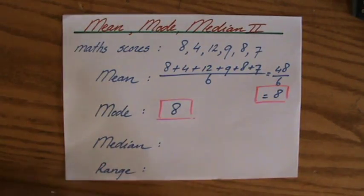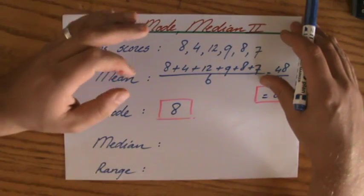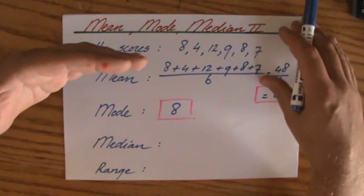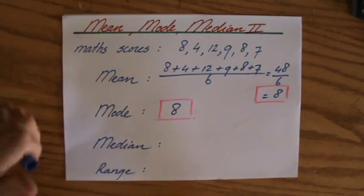Now the median, the median is that piece of information exactly in the middle. But careful, because what do students forget? They forget to order it before they find the median. So always order it first.